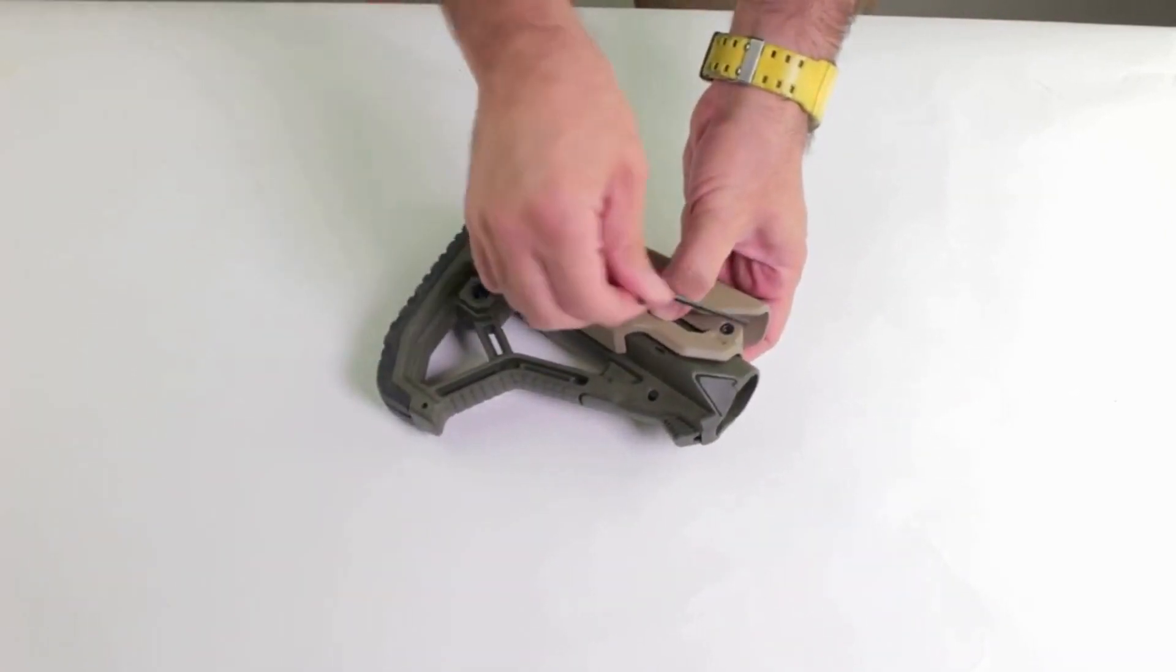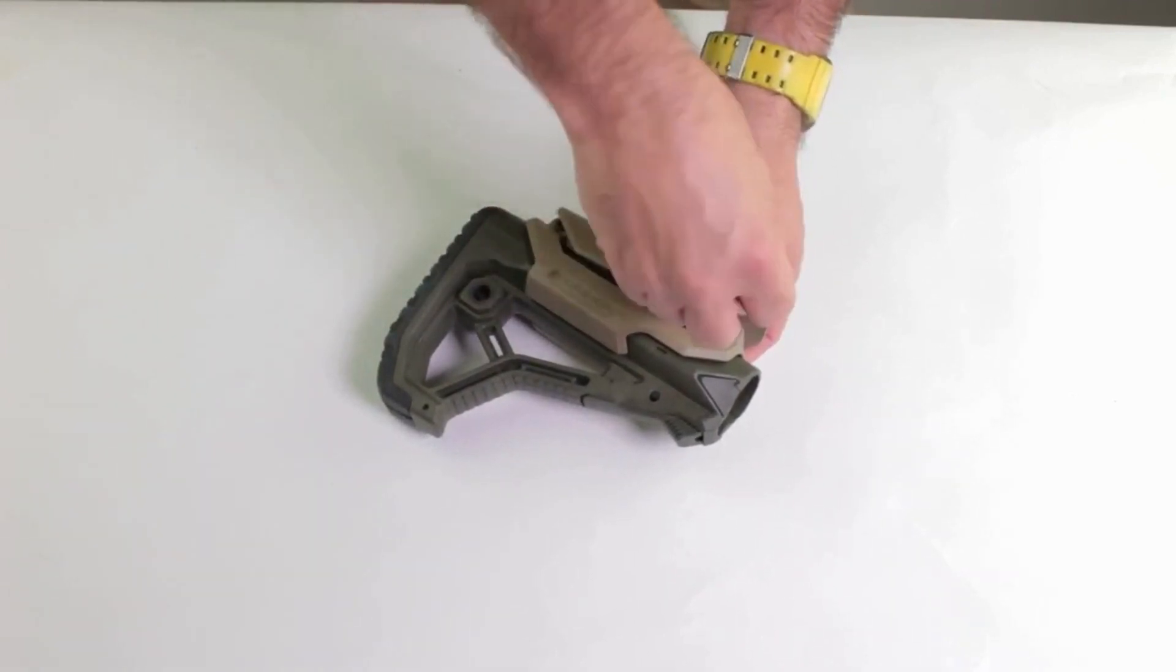We're going to start tightening the screws in reverse order, so we're going to start with this one, the front one.